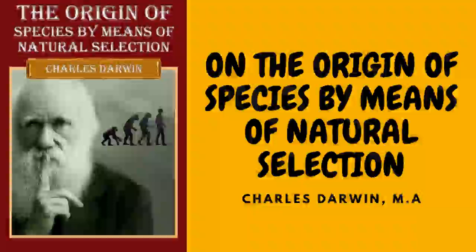Hence the supposed aboriginal stocks must either still exist in the countries where they were originally domesticated, and yet be unknown to ornithologists — which, considering their size, habits, and remarkable characters, seems very improbable — or they must have become extinct in the wild state. But birds breeding on precipices and good fliers are unlikely to be exterminated; and the common rock pigeon, which has the same habits with the domestic breeds, has not been exterminated even on several of the smaller British islets or on the shores of the Mediterranean. Hence the supposed extermination of so many species having similar habits with the rock pigeon seems to me a very rash assumption.